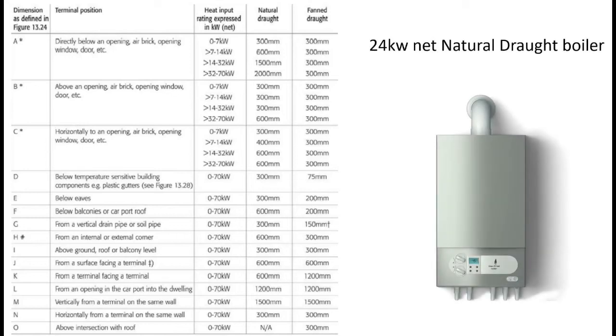In this case, we're going to use a 24 kilowatt net natural draft boiler. And as I said previously, we're going to stick it horizontally next to an opening. That could be a window, an air brick, a door, anything like that.